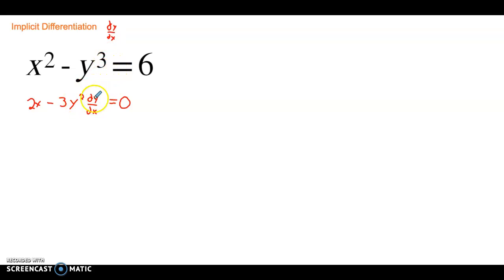So, sometimes you're going to have multiple dy over dx's, so the thought process here is get all the terms with the dy over dx on one side of the equal sign. All the terms without dy over dx, move them to the other side of the equal sign. So we're going to do that right now. Subtract 2x from both sides. What we get is negative 3y squared dy over dx equals negative 2x.